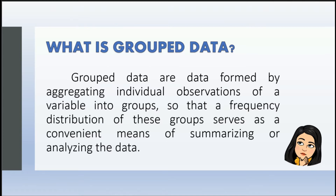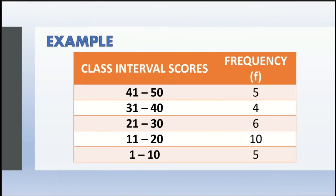Group data are data formed by aggregating individual observations of a variable into groups, so that a frequency distribution of this group serves as a convenient means of summarizing or analyzing the data. Group data is like counting how many times a certain number of years appears. Most of the time it is represented by a table like this one.